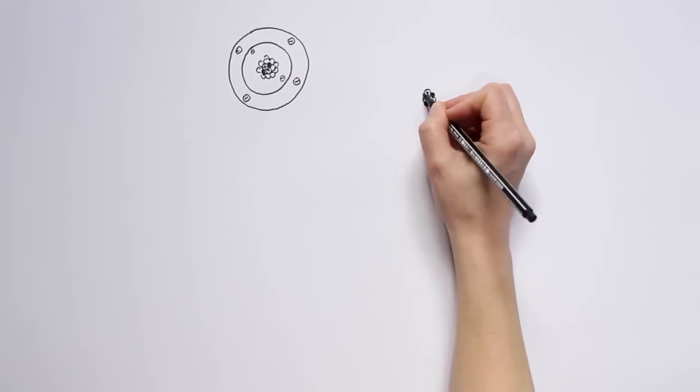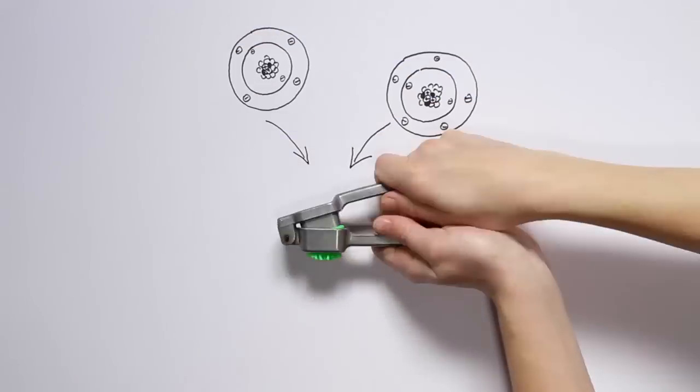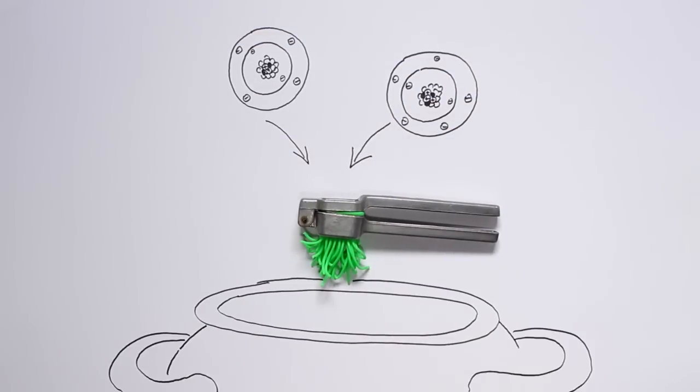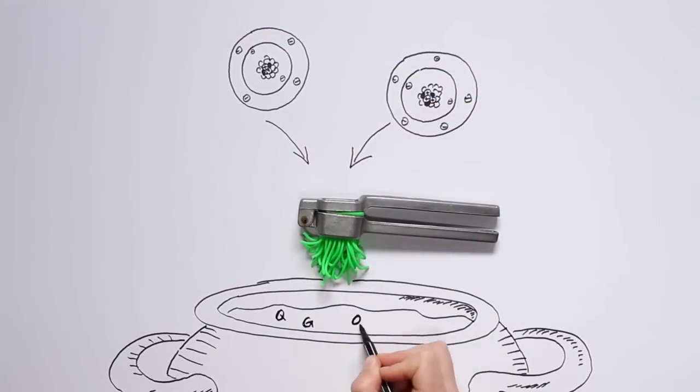Under such tremendous pressure, the atoms simply break up and form a soup, which physicists call a quark-gluon plasma.